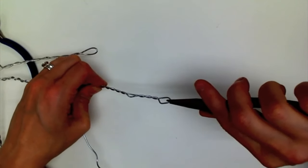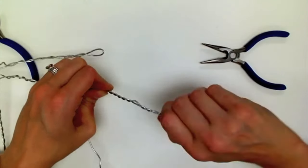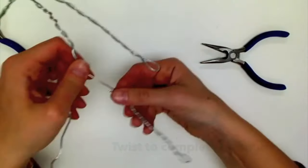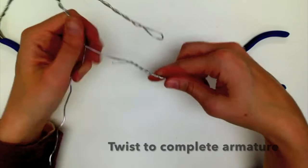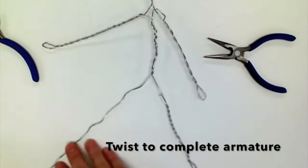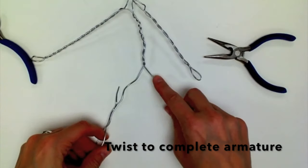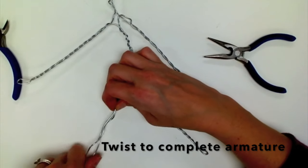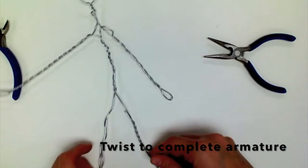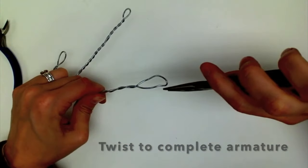You can use pliers if that's easier. You might have a little piece sticking off that you can bend in with pliers or cut off with clippers if it's not easy to wrap against the leg. Twist to complete the second leg, and your armature is finished.